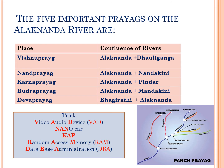The fourth prayag is Rudraprayag, which is a combination of Alaknanda and Mandakini rivers. We can remember this with RAM — Random Access Memory. The fifth prayag is Devprayag, which is a combination of Bhagirathi and Alaknanda rivers. We can remember this as DBA — Database Administrator.